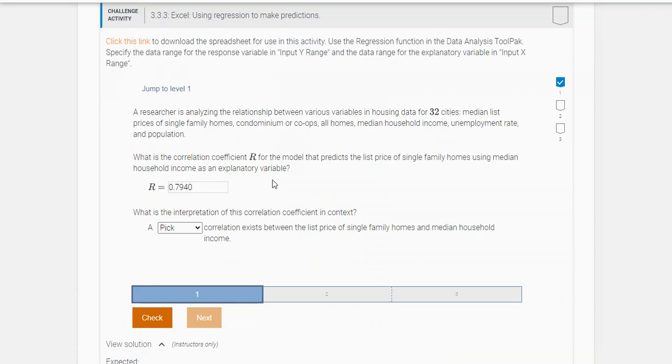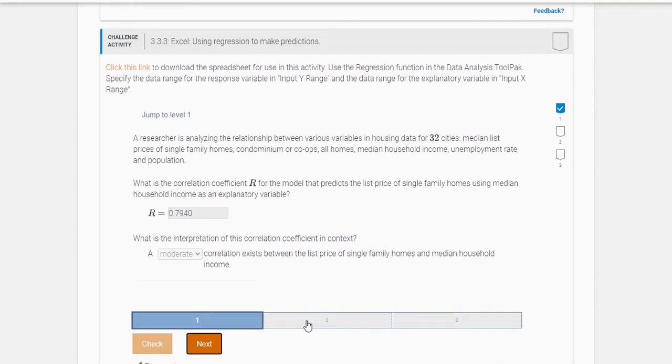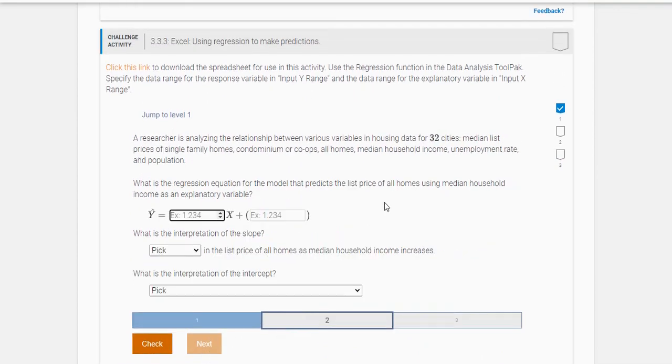And what is the interpretation of the correlation coefficient? In this case, because the correlation coefficient is less than 0.8—I know it's close, but anything less than 0.8 but above 0.4 indicates a moderate relationship. So we got it right here.